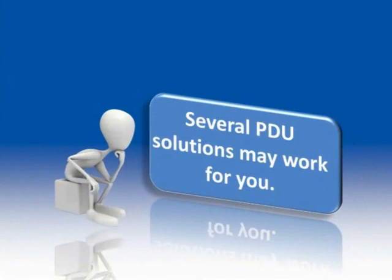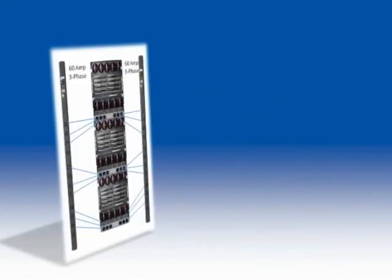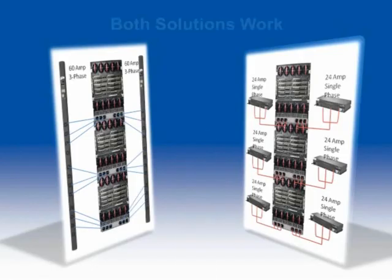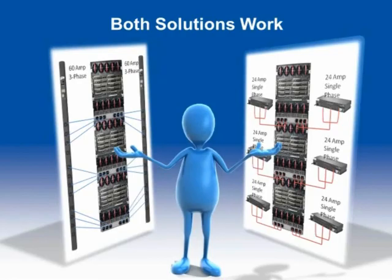When putting together your PDU solution, there can be several different yet correct solutions that work for you. The solution you choose will be determined by what power the data center has access to. Example 1 shows a solution deploying 3-phase PDUs — this uses fewer power drops, fewer breakers on the power panel, and takes up less room in the rack. Example 2 shows a facility that cannot provide 3-phase power, requiring more power drops, more breakers on the breaker panel, and additional room on the rack. Example 1 clearly shows that 3-phase power is more efficient, delivering more power more efficiently. However, both solutions have your servers up and running.